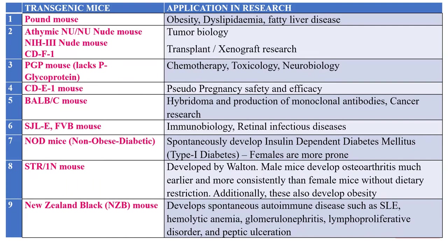The P-glycoprotein (PGP) mouse lacks P-glycoprotein and is useful in chemotherapy studies, toxicological research, and neurobiology. The CDE1 mouse is related to pseudopregnancy safety and efficacy. BALB/c mice are useful in production of monoclonal antibodies and cancer research.